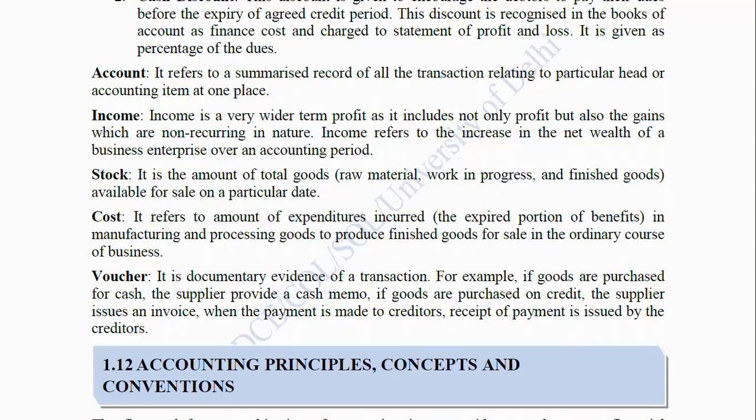Account: It refers to a summarized record of all the transactions relating to a particular head or accounting item at one place. Income: Income is a wider term than profit as it includes not only profit but also gains which are non-recurring in nature. Income refers to the increase in the net wealth of a business enterprise over an accounting period.